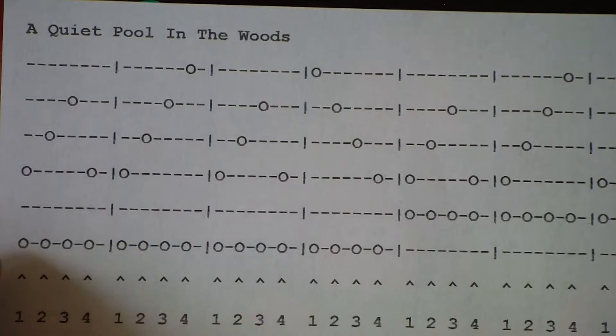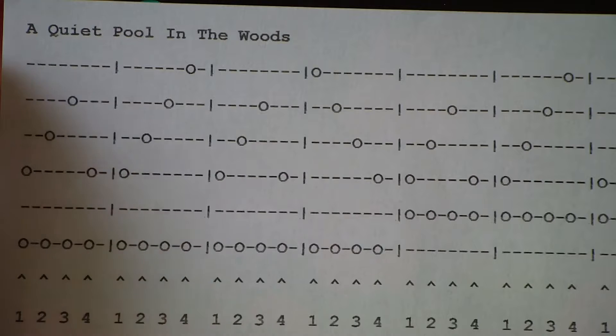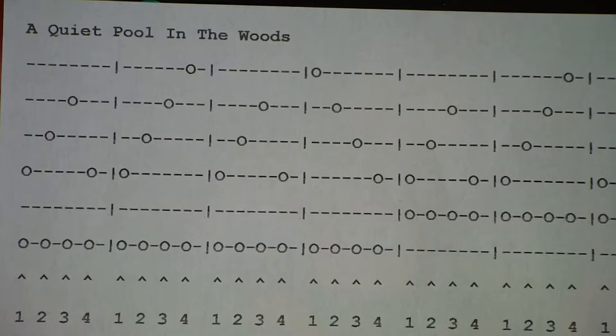Now, this O, that means that the string closest to your face is sounded on the first beat of the bar. The dash, on the next line, no O, so that string's not sounded. Next line, there's an O, so it's sounded. And the next three, there's just a dash. So, those strings aren't sounded.